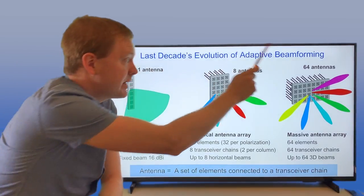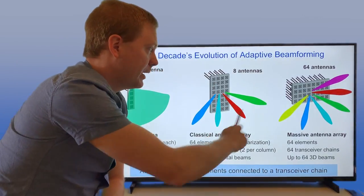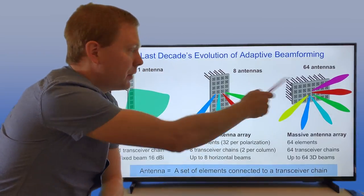Antennas is the number of inputs: one here, eight here, 64 here. And the form factor can still be the same in different cases here.